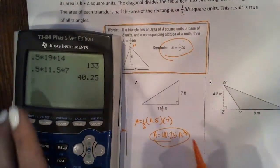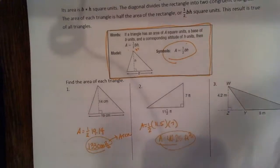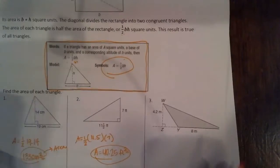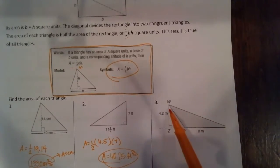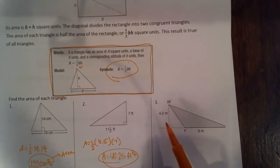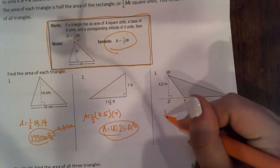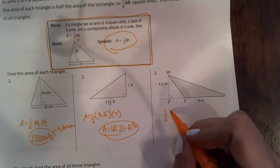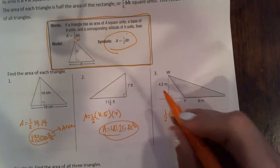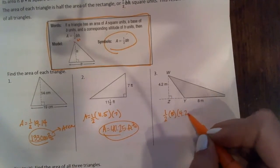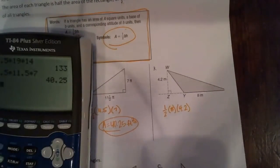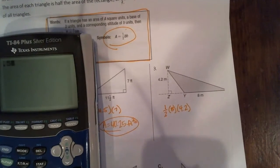Over here the shape's a little different but we just drop the tiles point down to get our height. One-half base 8, height 4.2. 0.5 times 8 times 4.2.